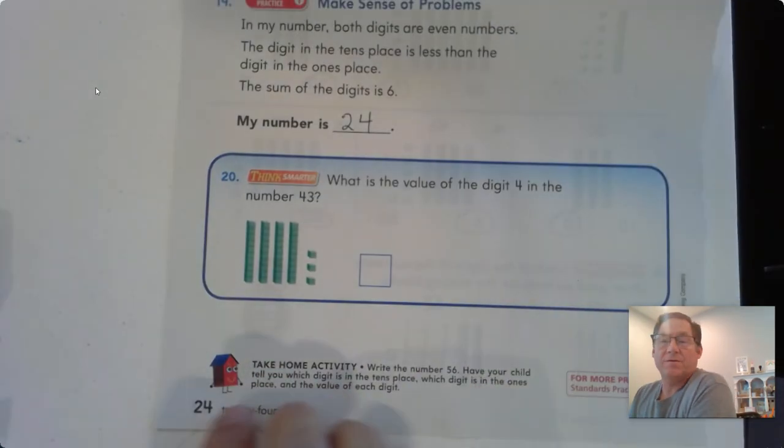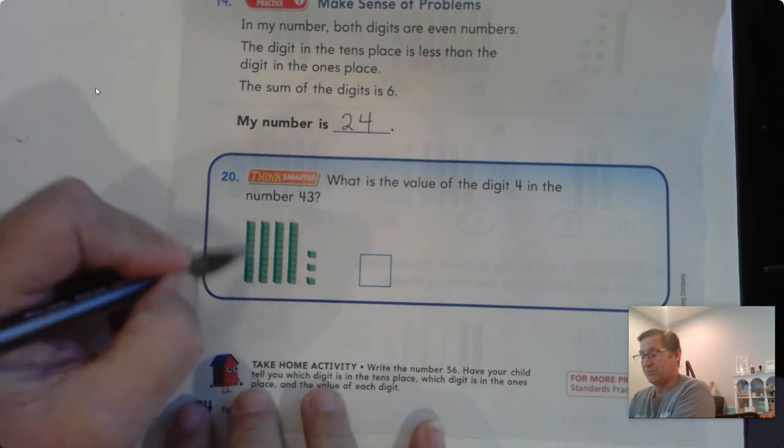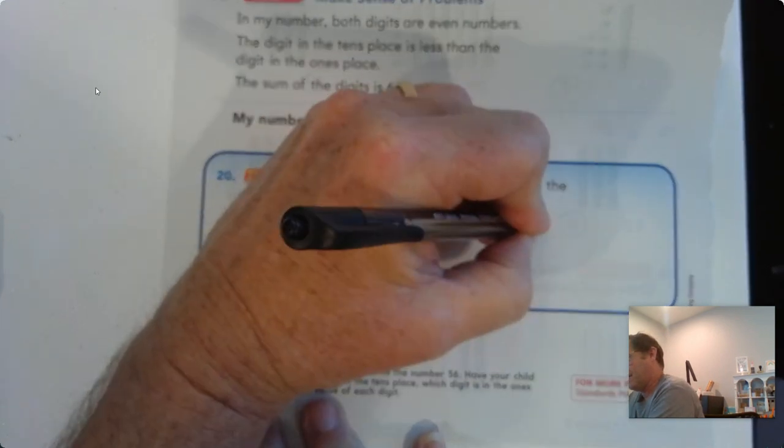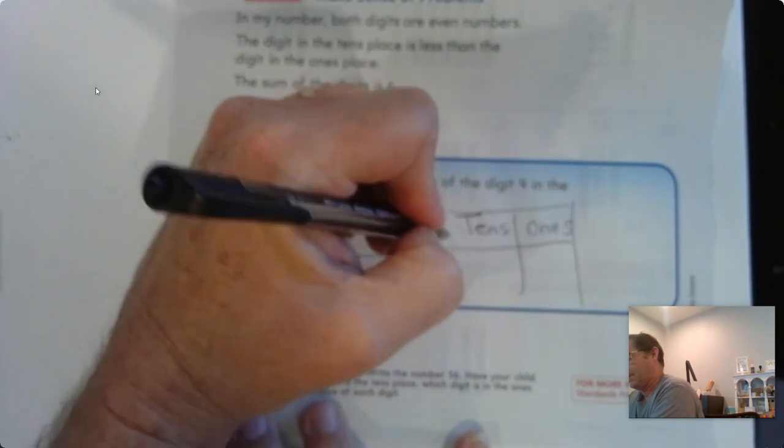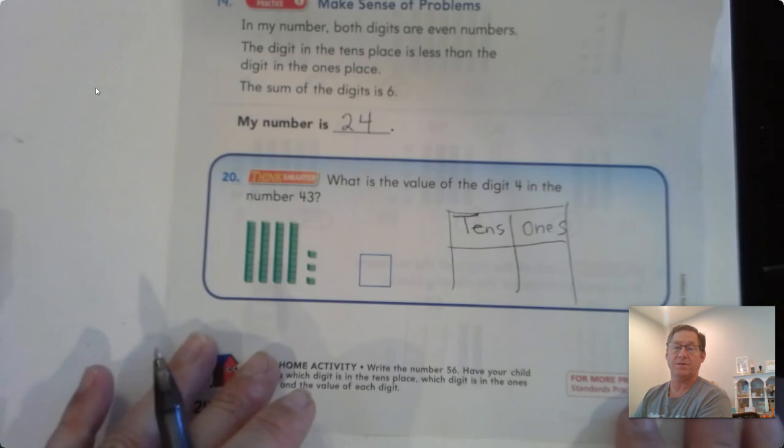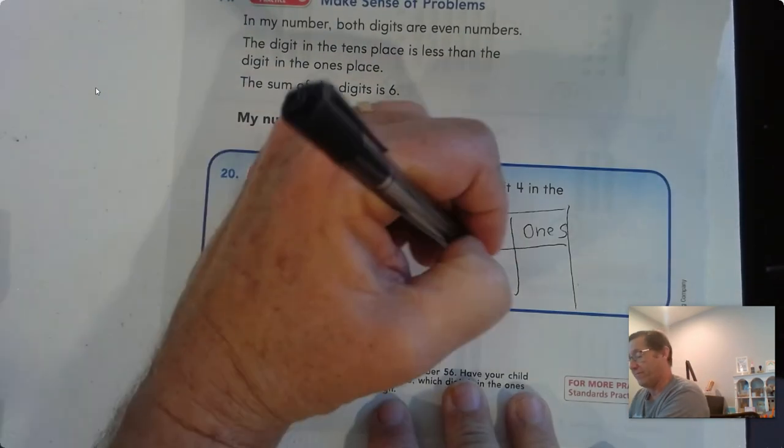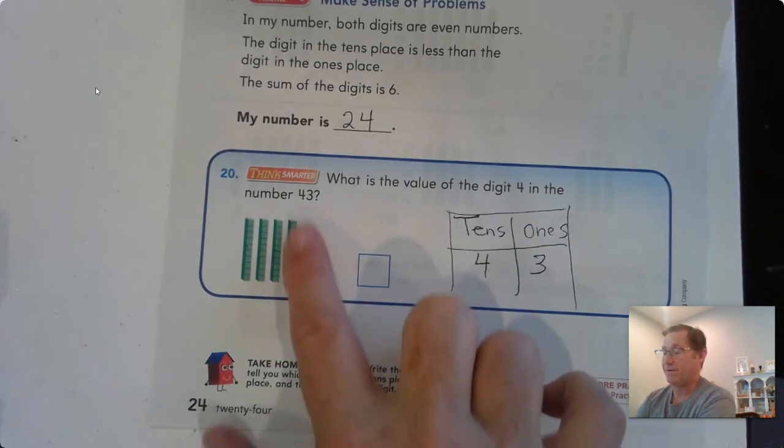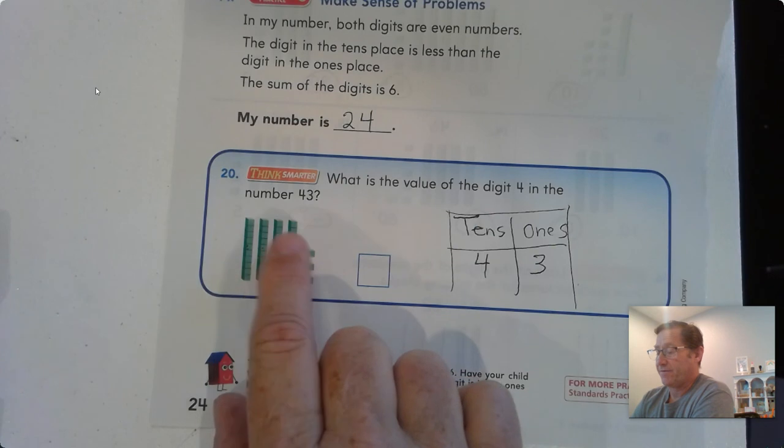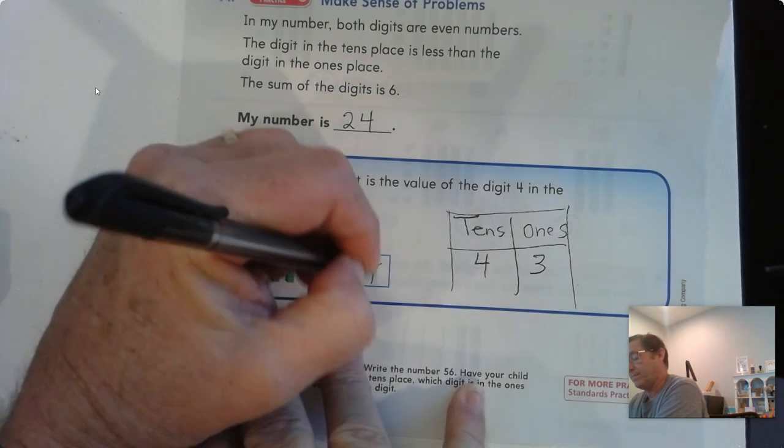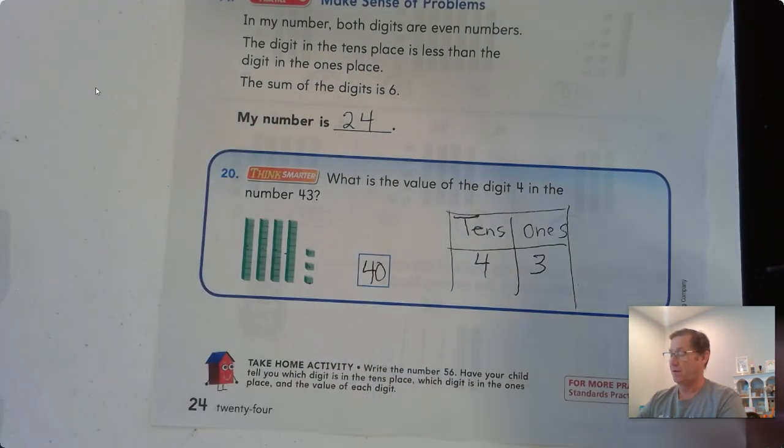Number 20: What is the value of the digit 4 in the number 43? Quickly draw a tens and ones place value chart. I have 1, 2, 3, 4 tens and 1, 2, 3 ones. How do we read this number? 10, 20, 30, 40 and 3. So what is the value of the 4? 40.